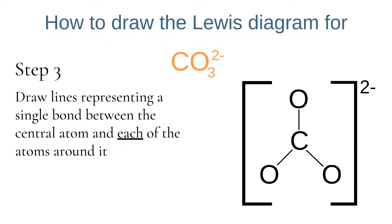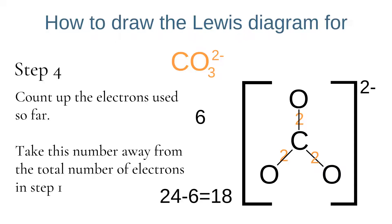Now we draw a single line between the central atom and each of the surrounding atoms, representing a single bond or two electrons. We need to work out how many of our 24 electrons have been used. Each single line represents two electrons, and as we have three single bonds so far we have used a total of six electrons. We take this away from the total of 24, leaving 18 electrons still to add to our structure.